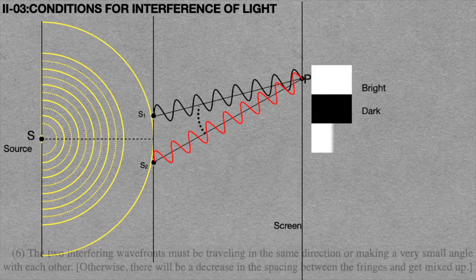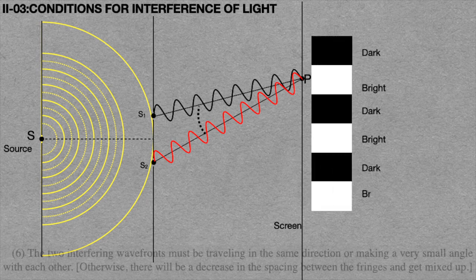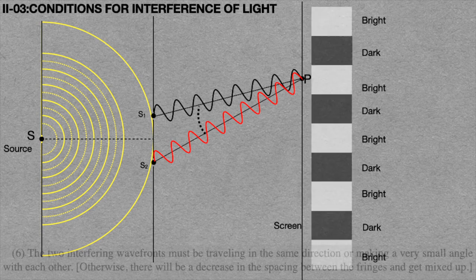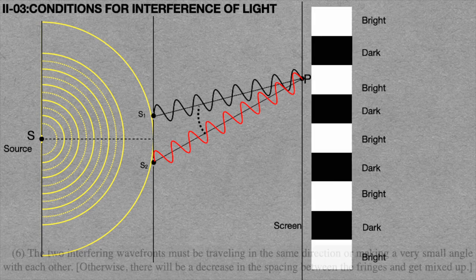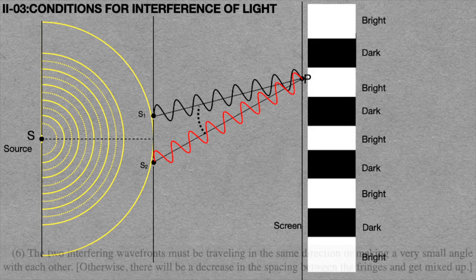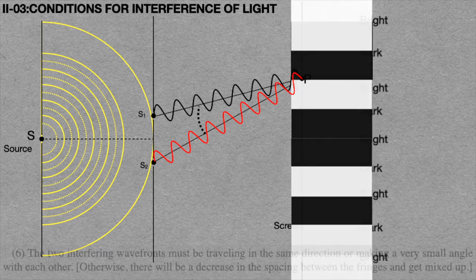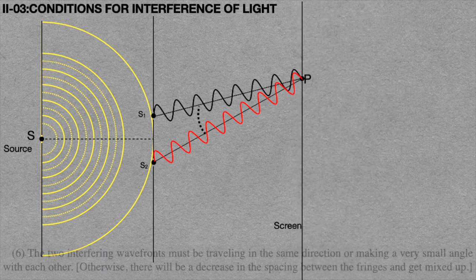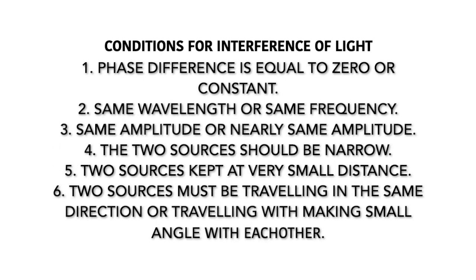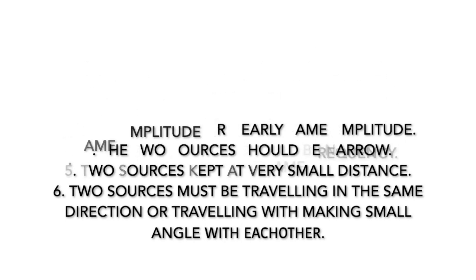Then only a stable interference pattern is formed. In case the two sources are not travelling in the same direction or making a very small angle with each other, there will be a decrease in spacing between the fringes and they get mixed up. Hence, if the two sources satisfy this sixth condition, then only a stable interference pattern is formed on the screen.